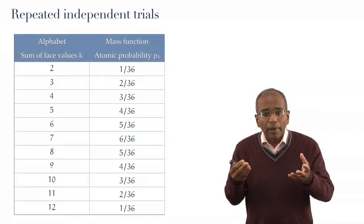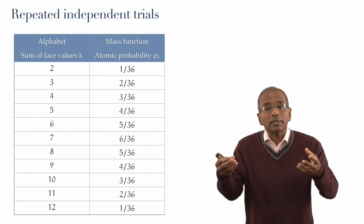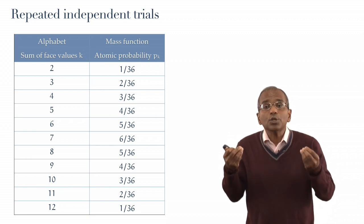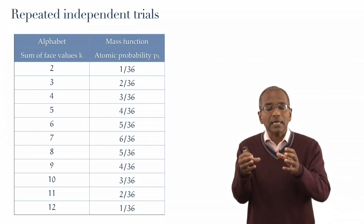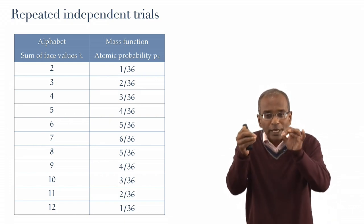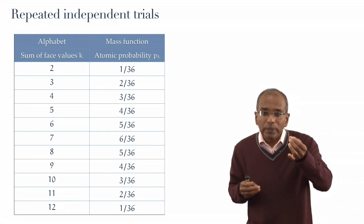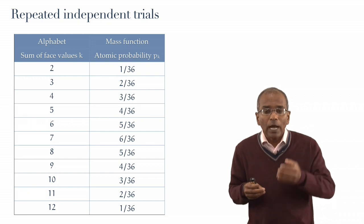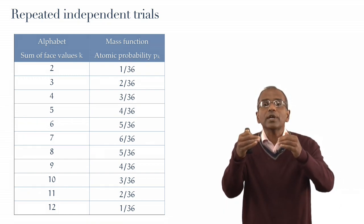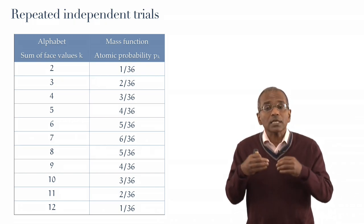For each throw of the pair of dice, we are going to sum the face values, and the residual experiment, then, can be thought of as having an alphabet of the numbers 2 through 12. And we have seen that the appropriate probability measure, the atomic measure attached to each of these possibilities, is 1 in 36 for 2, 2 in 36 for 3, 3 in 36 for 4, and so on, with 6 in 36 for 7. And the probability is decreasing apace, 5 in 36, 4 in 36, and back down to 1 in 36 for 12.